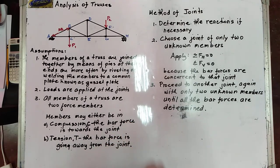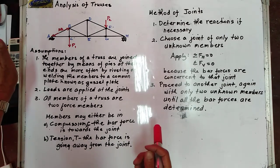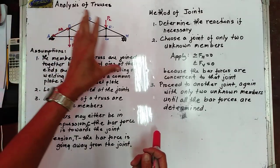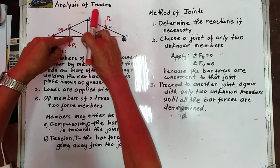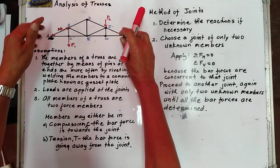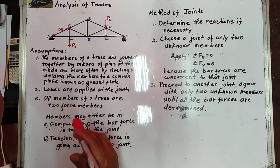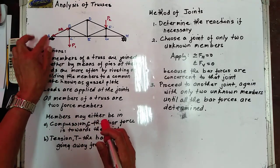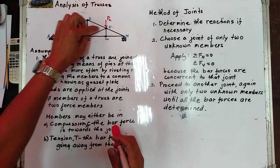Let us now proceed to analysis of trusses. A truss is composed of members — these members are your top chord, your bottom chord, the diagonals, and the web members, which are usually arranged in a triangular manner. This is your truss.